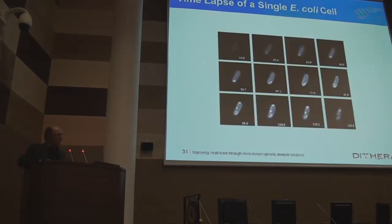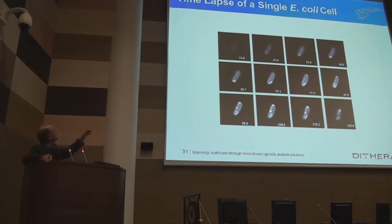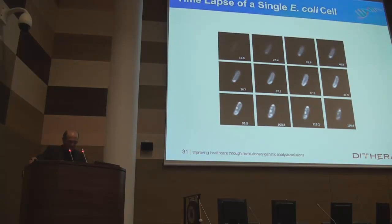If you look in the microscope, you can watch in a single living cell — and these results were quite surprising when we first saw them — that the RNA is actually being made in one place in the cell, slowly spreading around and then being concentrated at a number of different focal points in the cell. Honestly, we still don't know what all this means, but it's a very powerful tool.